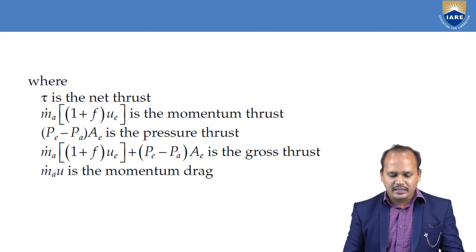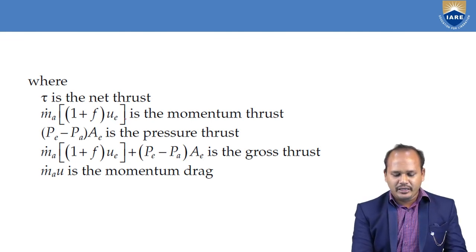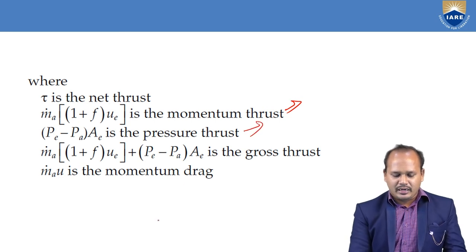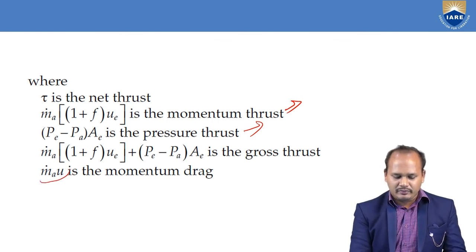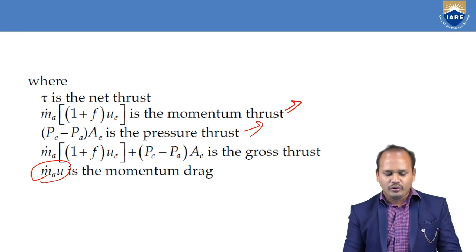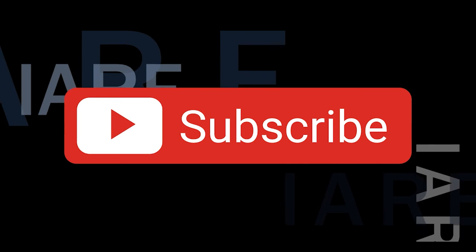Tau is the net thrust. m_dot_a * (1 + f) * ue is called the momentum thrust and (Pe minus Pa) * Ae is called the pressure thrust; the summation of these two is called the gross thrust. And the term m_dot_a * u is called the momentum drag. With this, I will finish today's lecture. Like, share, and subscribe — hit the bell icon for more updates.